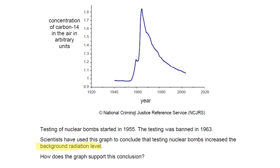Testing started in 1955 and was banned in 1963. Think back to the graph — something happened around 1955, and something happened around 1963. Pause the video, have a little go, then start the video again and I'll tell you what it should look like.